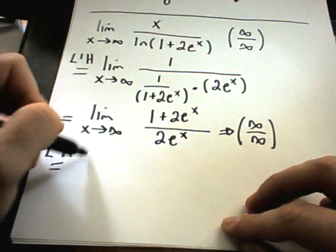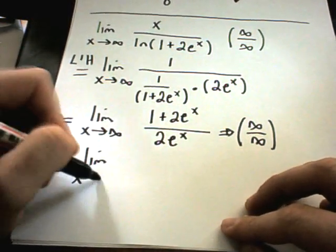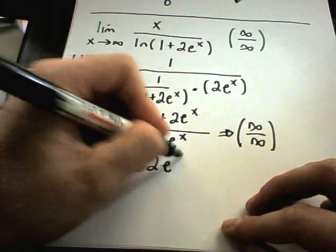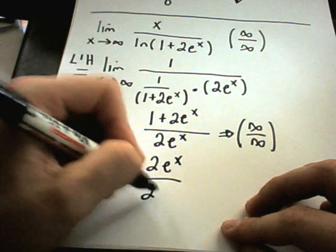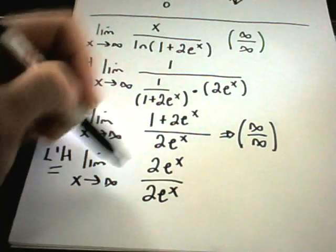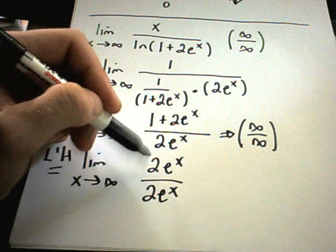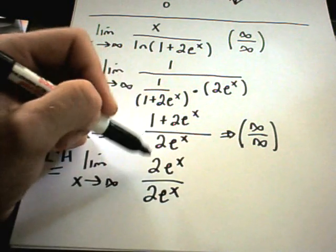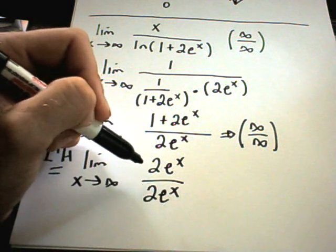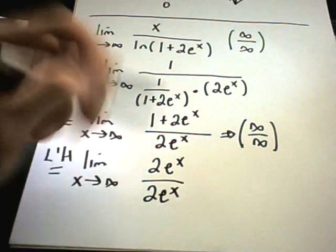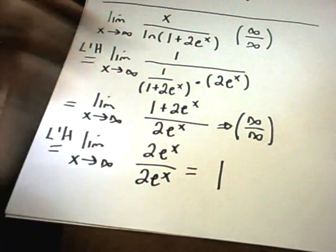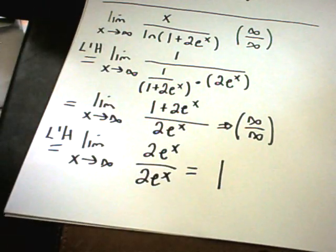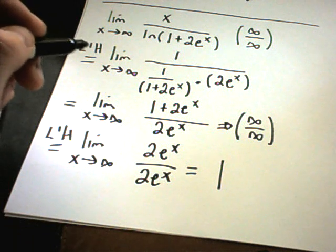You can use L'Hôpital's Rule as many times as you want, so let's apply it again. The derivative of 1 is 0, and the derivative of 2eˣ is 2eˣ on top; same thing on the bottom. Now remember to simplify algebraically: 2eˣ divided by 2eˣ is just 1. And the limit as x goes to infinity of 1 is simply 1. So the answer in this case is 1.